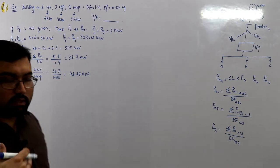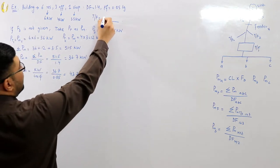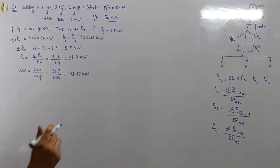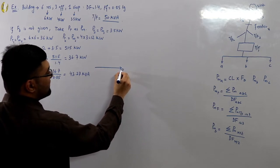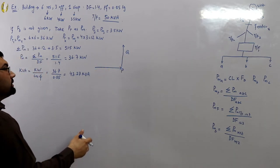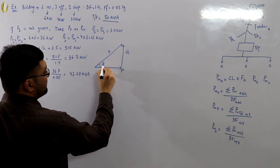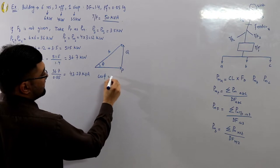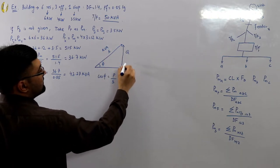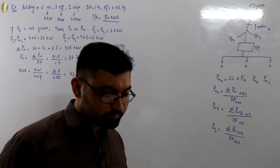The available transformer should be a little higher than 43.2 kVA, so I would suggest a 50 kVA transformer for this building. Regarding power factor: real power P is on the x-axis, reactive power Q is upward or downward depending on inductive load, and apparent power S is the hypotenuse. cos φ = P / S, where S is in kVA, P is in kilowatts, and Q is in kVAr.